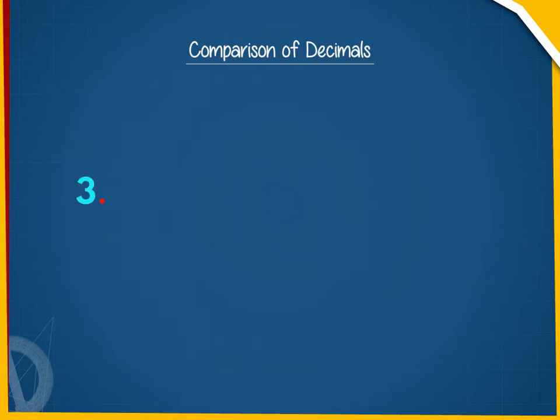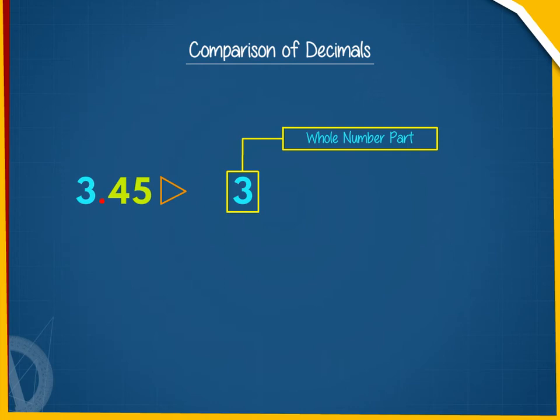For example, 3.45 has 3 as the whole number part and 45 as the decimal part.